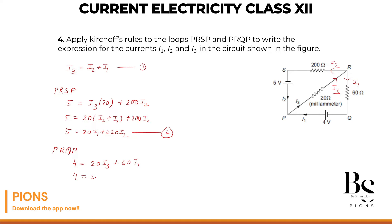Let's substitute the value of I3. So I3 is nothing but I2 plus I1, or I1 plus I2, plus 60 I1. So this will give you 4 equals 20 and 60, 80 I1 plus 20 I2. Equation number 3.